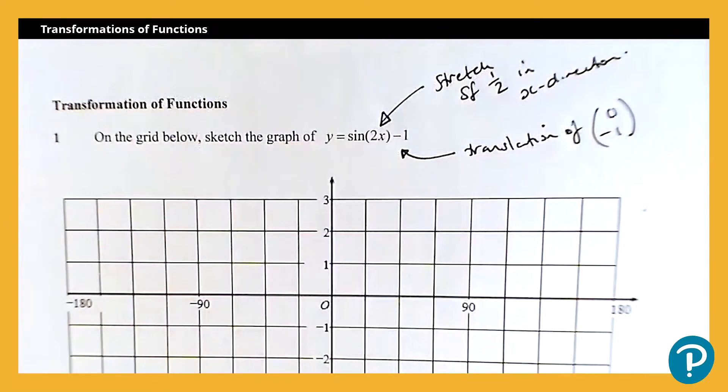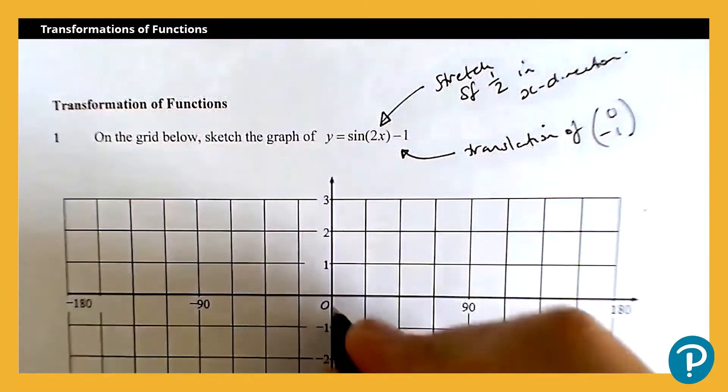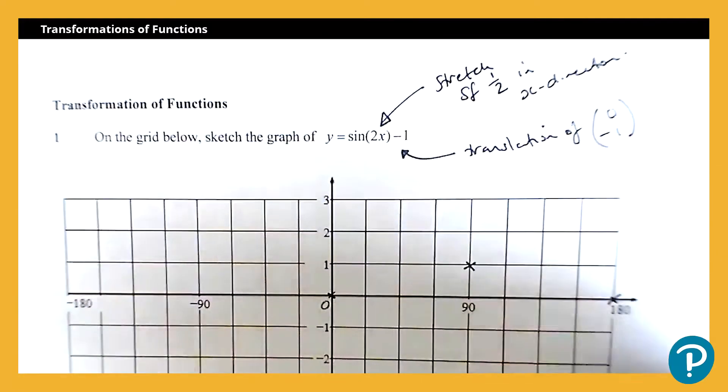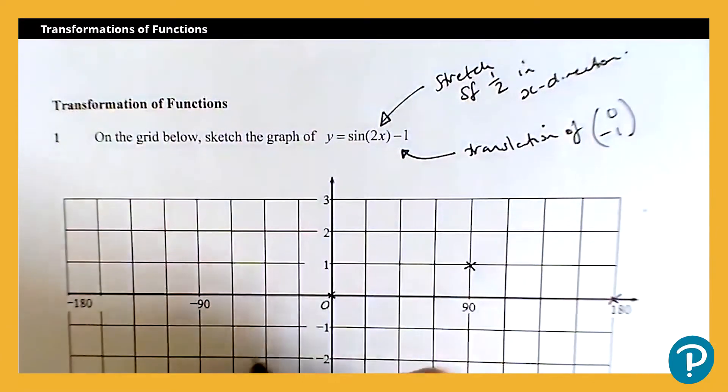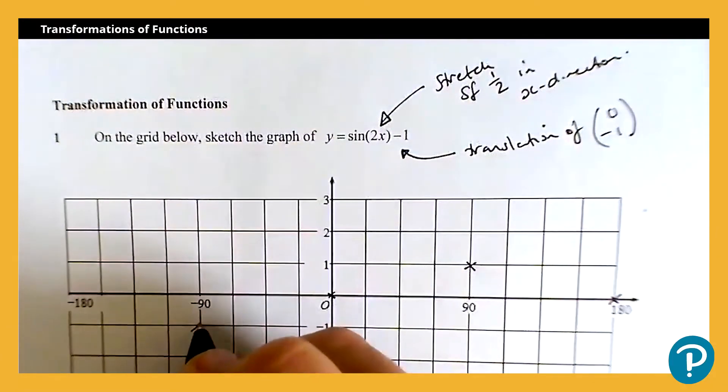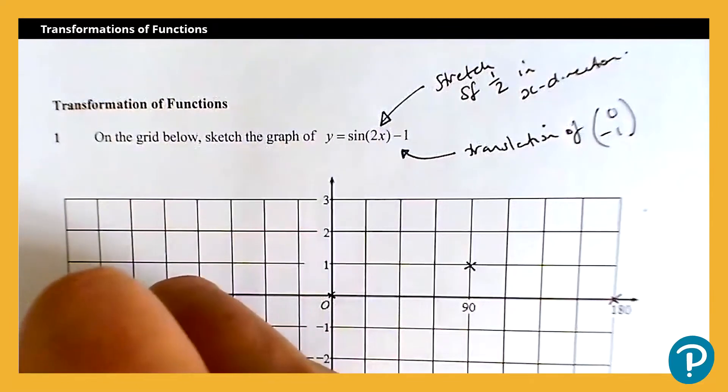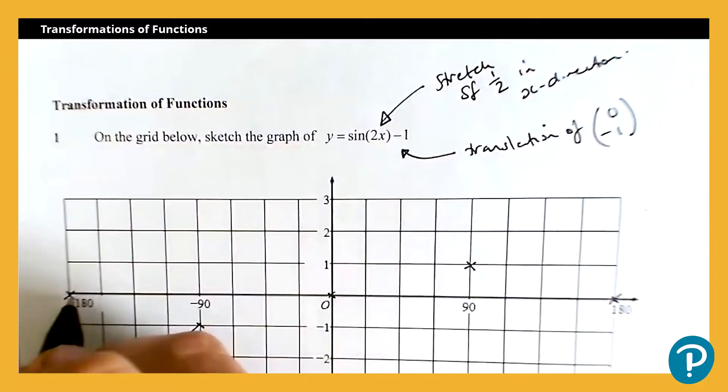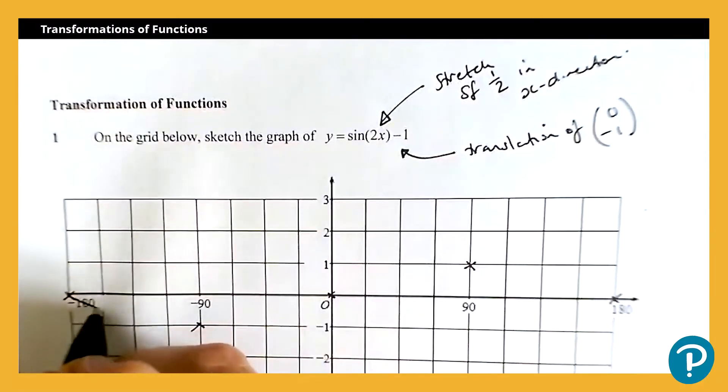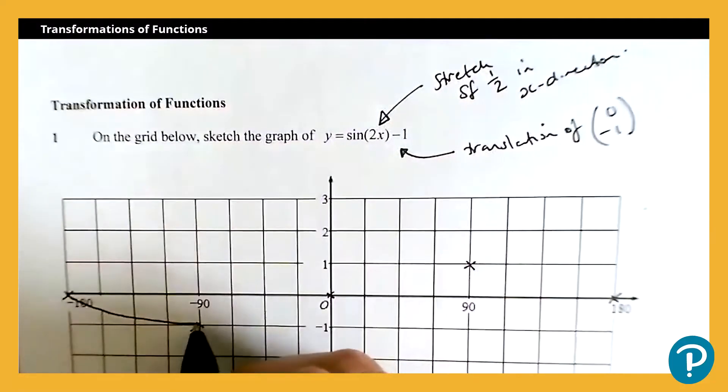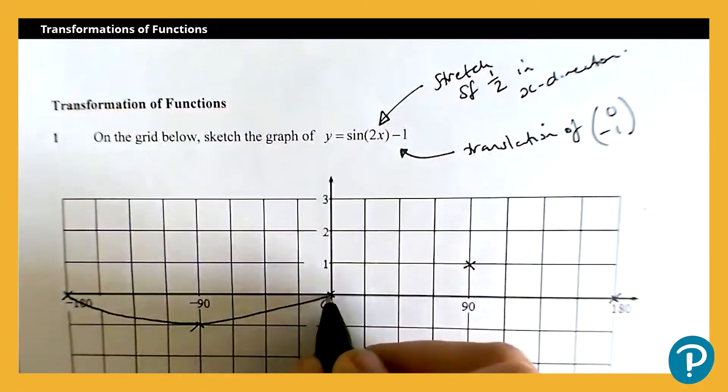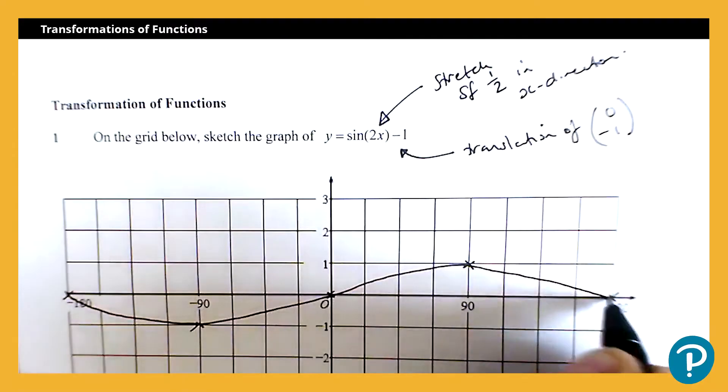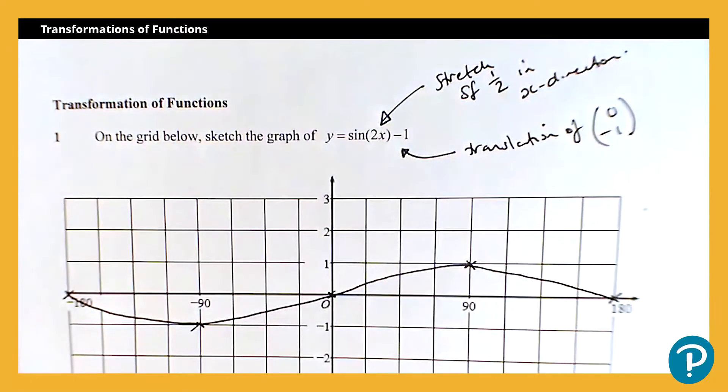So we should know the key points really, that sine x goes through the origin. It goes through 90, 1, it goes through 180, 0. It also goes through negative 90, negative 1, and it goes through negative 180, 0. So again, we are just dealing with a sketch. So as long as we're going through those key coordinates, we don't need to panic too much. So there's my curve.